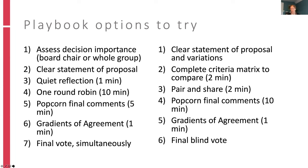Based on the results of the gradients of agreement, maybe you move to a vote. One thing I want to point out about voting in any scenario: there may be situations — really contentious decisions where you know there are a lot of feelings in the room — where it is completely okay and sometimes a very good idea to do a blind vote at the end. The numbers will still be recorded, but people sometimes feel more able to vote the way they need to vote without ending up being attacked later on.